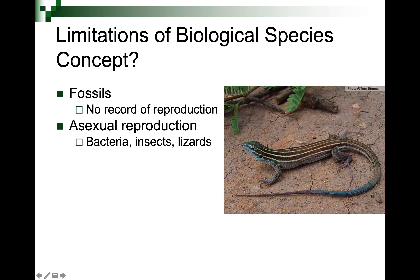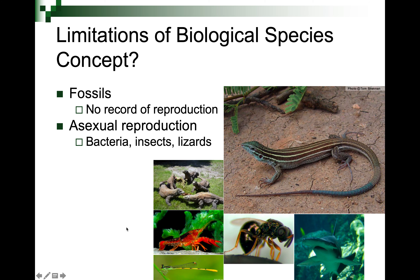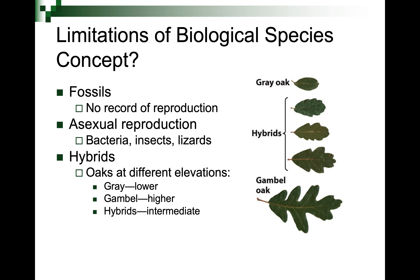There's also asexual reproduction — bacteria, some insects, lizards, fish, and others reproduce without mating. And then there are hybrids: a liger is a cross between a lion and a tiger, clearly two separate species, but when they mate they produce completely fertile offspring. You could take a liger back to a tiger and create a tigon, or back to a lion and create a ligon — they're fully interfertile. But are they their own species? So if the biological species concept isn't great for fossils and other situations, how do we identify a species?